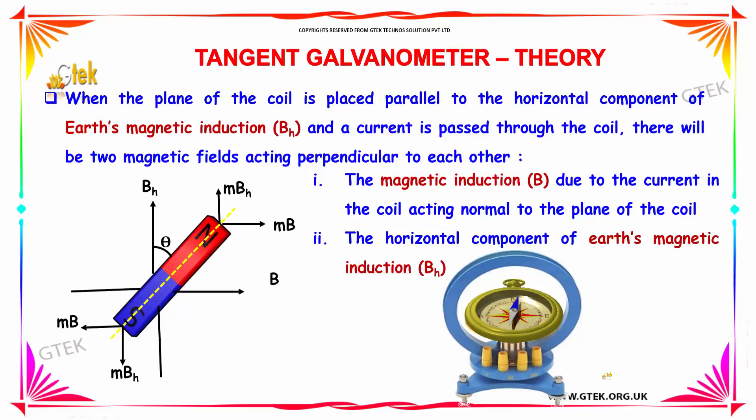One is the current through the coil, the other one is Earth's magnetic induction, which is indicated here.